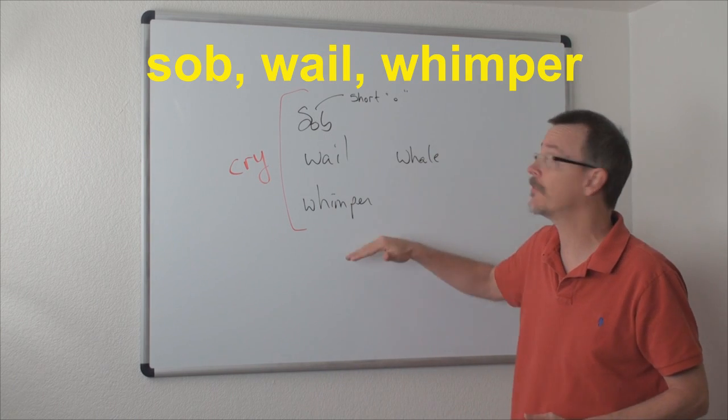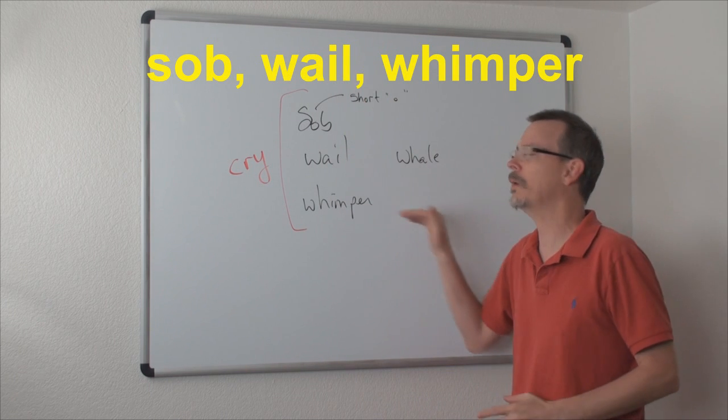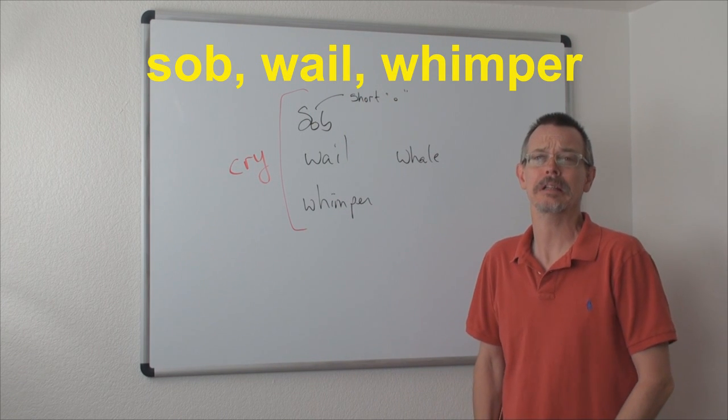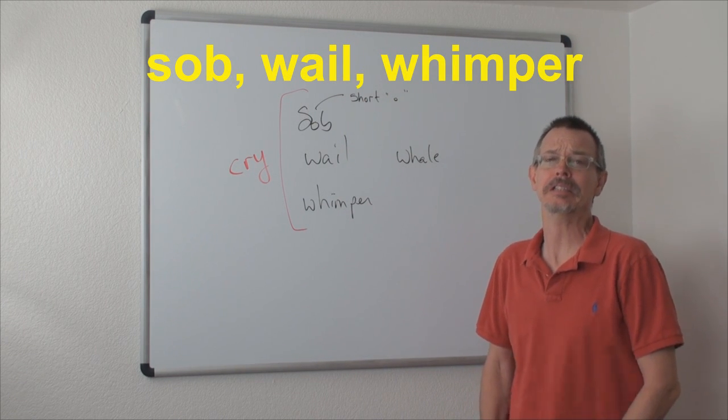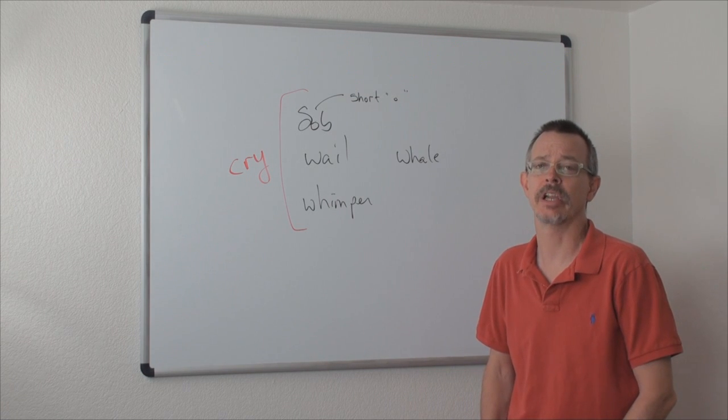So now you can kind of see the difference here. Sob - wet. Wail - loud. Whimper - it's like this. And children and animals do it. Let's check out a dialogue.